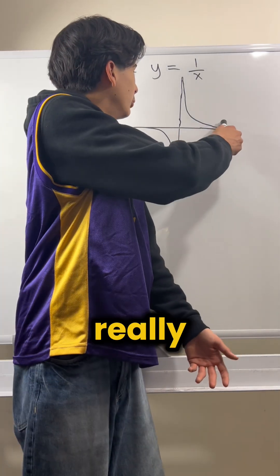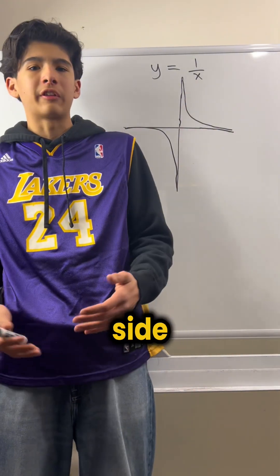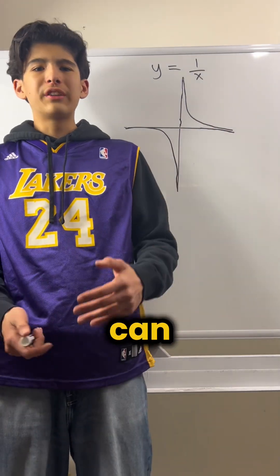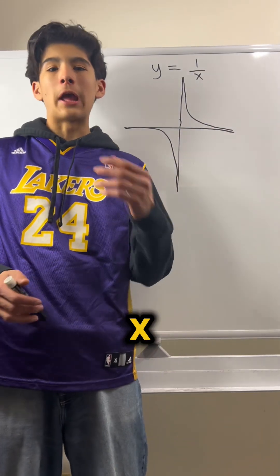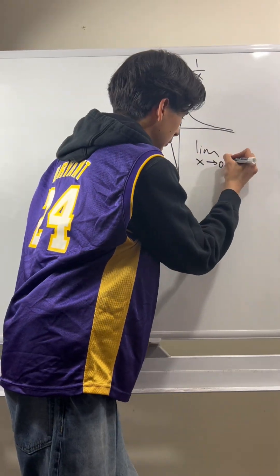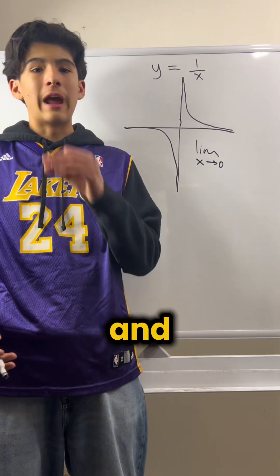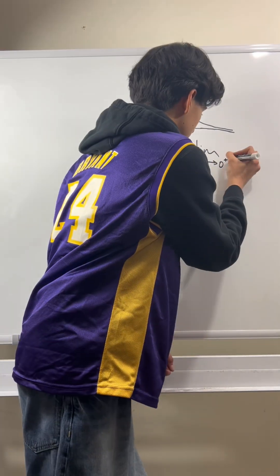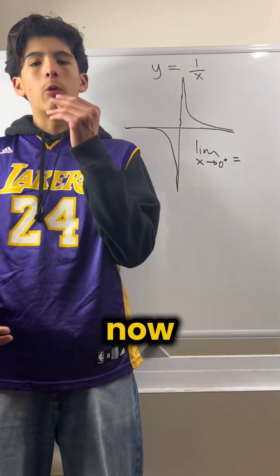As x gets really, really close to zero from the positive side, you'll see that it goes up really, really fast, which is what I said earlier. So we could say for this side, the limit as x approaches zero from the positive side. And you'd indicate that by putting a little plus on top of the zero. Equals, and now what would it equal?